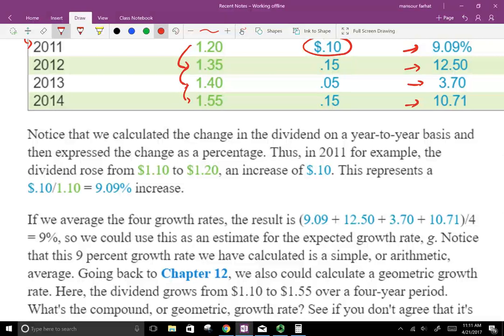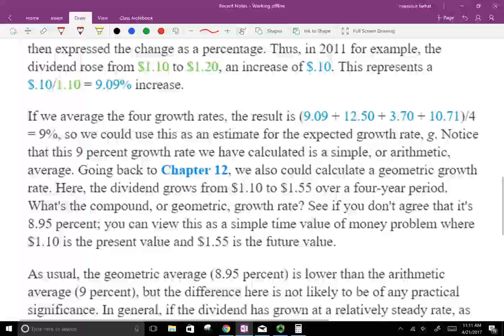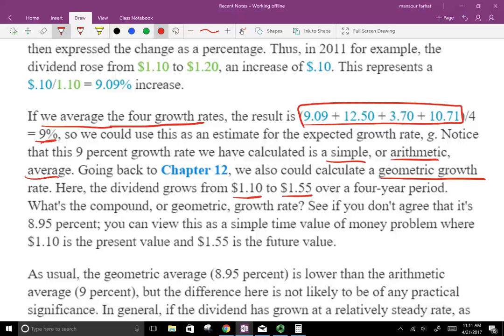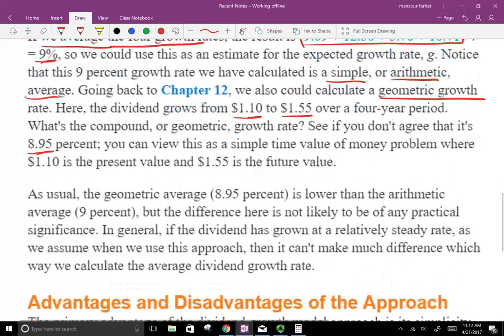Notice that we calculated the change in dividend on a year-to-year basis. We're going to average the four growth rates. We take all four growth rates, divide them by four, and we'll get 9%. Notice this is a simple arithmetic average. If we also calculated the geometric growth rate, the dividend growth from $1.10 to $1.55 over a four-year period, we can see it's 8.95%. So it's very similar. In this situation, if you use 9% or 8.95%, if you use the geometric or the average, they're pretty much the same because the difference is not that significant, 0.05%. They're both based on past results, so it doesn't mean you get guaranteed future results. In a sense, you're estimating the future, so whether it's 9% or 8.95%, they're both estimates.